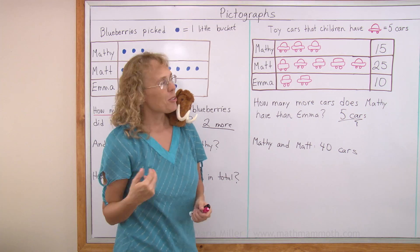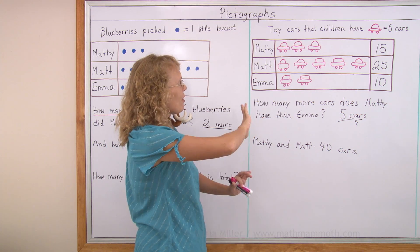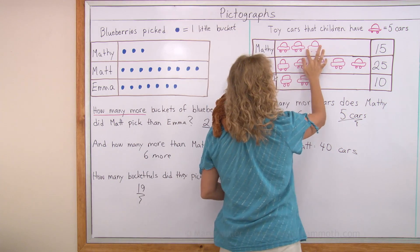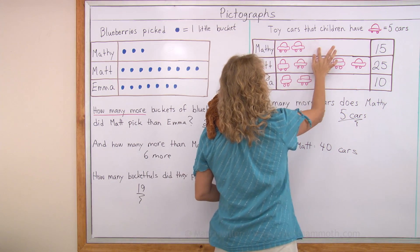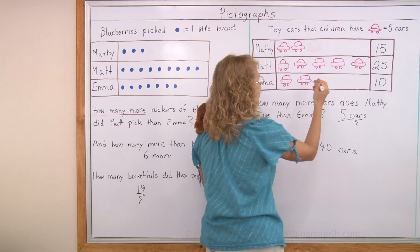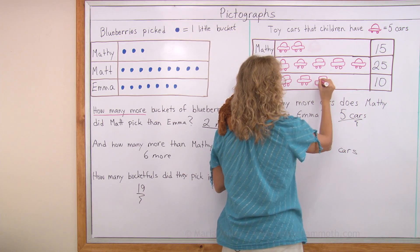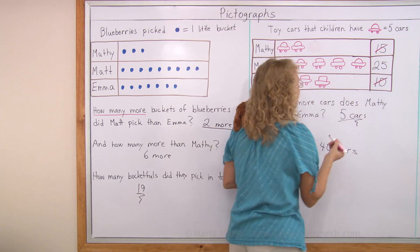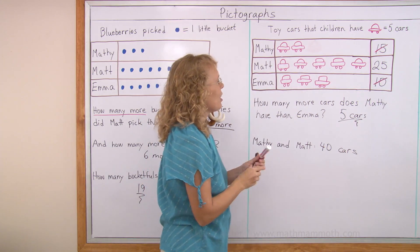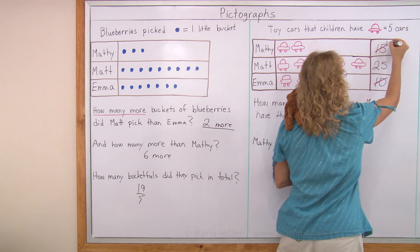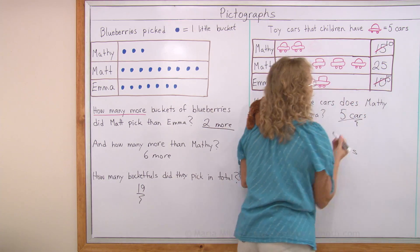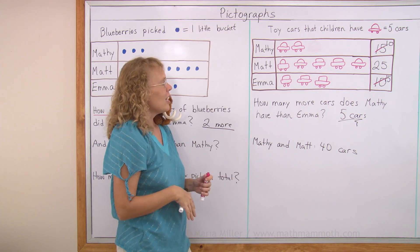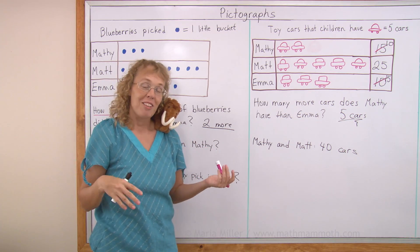Here's another kind of problem you could make. Instead of Matthew giving one car to Emma, how about if Matthew gives five cars to Emma? You can erase one of Matthew's car pictures and draw it for Emma. Then Matthew would have ten and Emma would have fifteen. Then you could ask: if Matt gives ten cars to Emma, how many more cars does Emma have than Matthew?